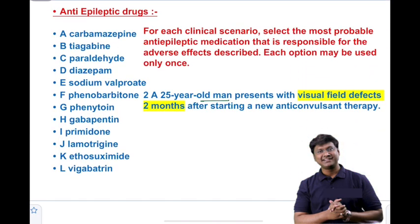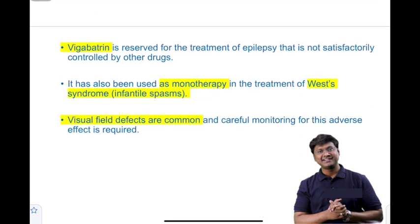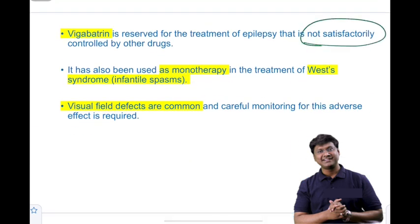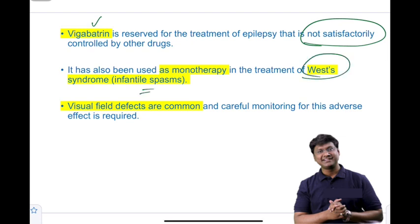Second clinical scenario: a 25-year-old man presents with visual field defects two months after starting a new anti-convulsant therapy. The answer is vigabatrin. Vigabatrin is not a first-line anti-epileptic drug; it is reserved for epilepsy not satisfactorily controlled by other drugs. As monotherapy, vigabatrin is the drug of choice in West syndrome — infantile spasm associated with tuberous sclerosis. Remember: V for vigabatrin, V for visual field effects.